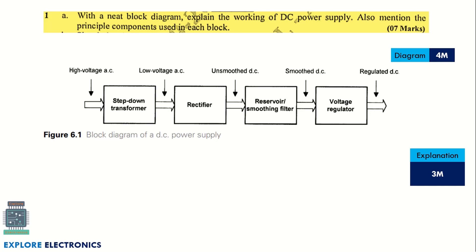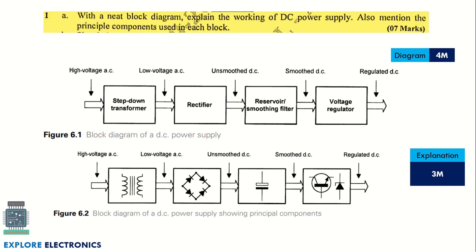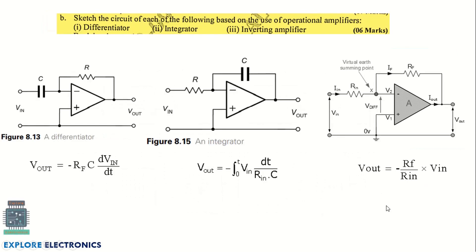The first question is on DC power supply: with a neat diagram, explain the working of a DC power supply and mention the principal components used in each block. This question is very important and has also been asked in the first semester exam. It carries seven marks — the block diagram is worth four to five marks, and the remaining marks are for explanation of each block: step-down transformer, rectifier, reservoir or smoothing filter, and voltage regulator.